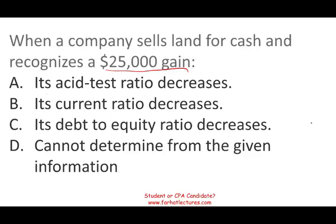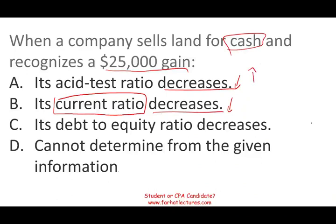What do I mean by basics? Choice A says the asset test ratio will decrease. Choice B says the current ratio will decrease. If you know anything about those two ratios, they're very similar to each other. If the current ratio goes down, most likely the asset test ratio will go down. We know that we sold for cash, so cash went up. Cash is a current asset. If cash is a current asset and nothing happened to our liabilities, the current ratio should go up because we have more cash and current liabilities stay the same. So immediately, I'm done with A and B — I'm down to 50-50.